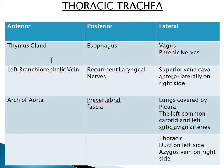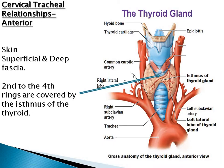The thoracic trachea: anteriorly lie the thymus gland, the left brachiocephalic vein, and the arch of the aorta. Posteriorly, same as the cervical trachea — the esophagus, recurrent laryngeal nerve, and prevertebral fascia. Laterally lie the vagus nerve, the phrenic nerve, the superior vena cava anterolaterally on the right side, the lung covered by pleura, the left common carotid and left subclavian arteries, the thoracic duct on the left side, and the azygos vein on the right side.